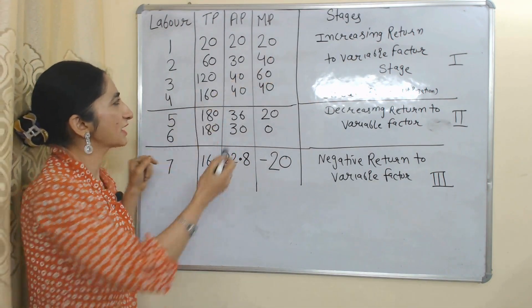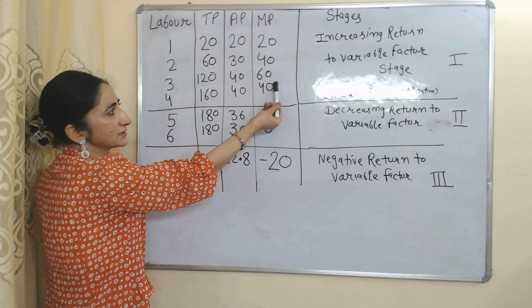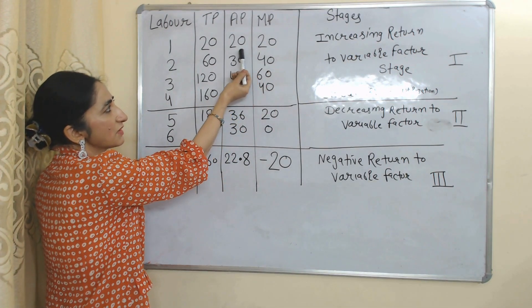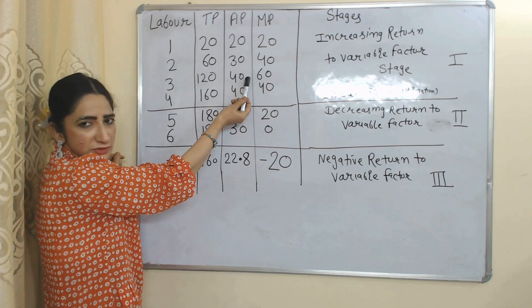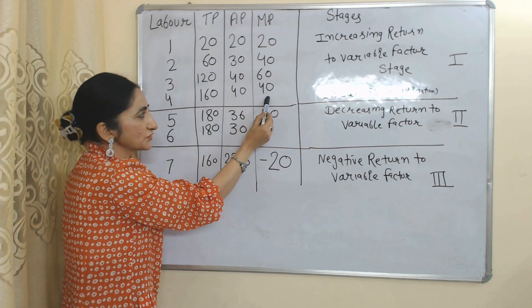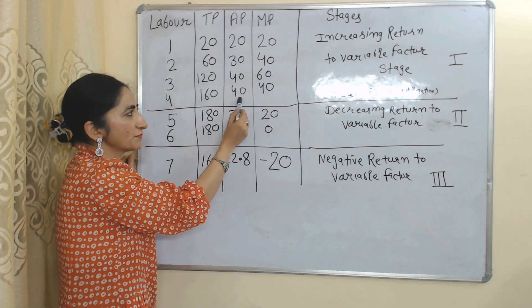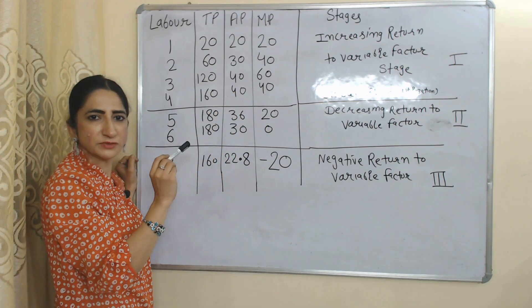Here you can see our marginal product is continuously increasing, and marginal product is more than our average product. But at the end of the first stage, our marginal product becomes equal to average product.